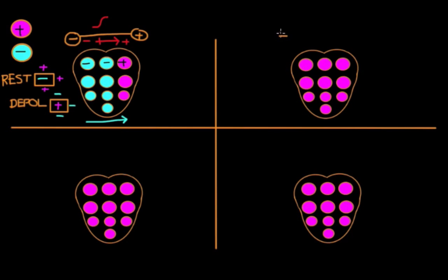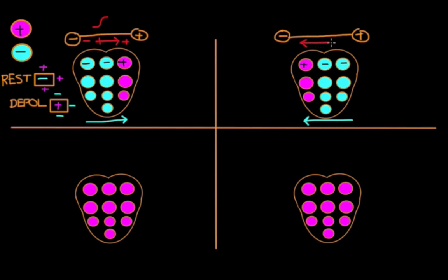Let's look at another example with the same probe orientation, except this time the wave of depolarization goes in the opposite direction — starting on the same side as the positive probe and moving towards the negative probe. We still create a dipole with positive and negative cells, and the dipole is in the same orientation as the probe pair. But this time, the head of the dipole points towards the negative lead, and on the EKG machine this looks like a negative deflection.